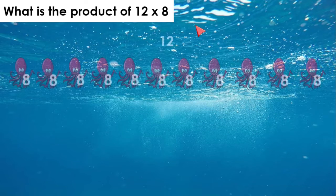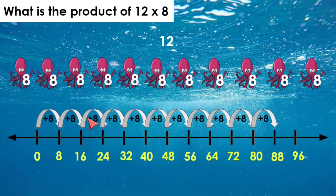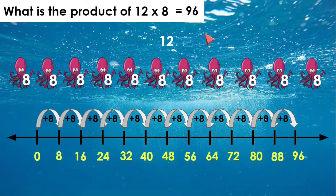12 times 8. Let's go ahead and skip count: 8, 16, 24, 32, 40, 48, 56, 64, 72, 80, 88. Let's add 8 more, and we get 96. 12 times 8 equals 96.